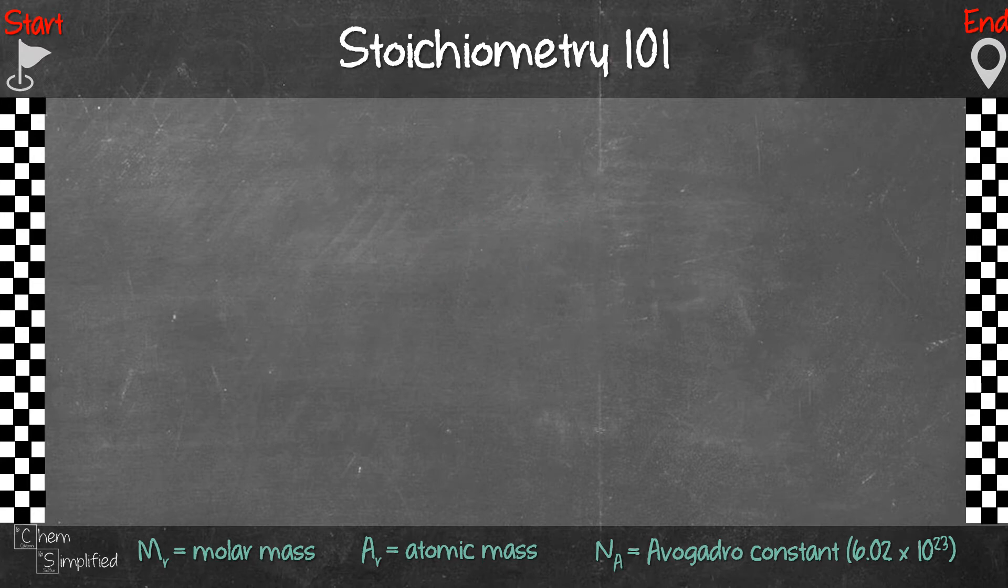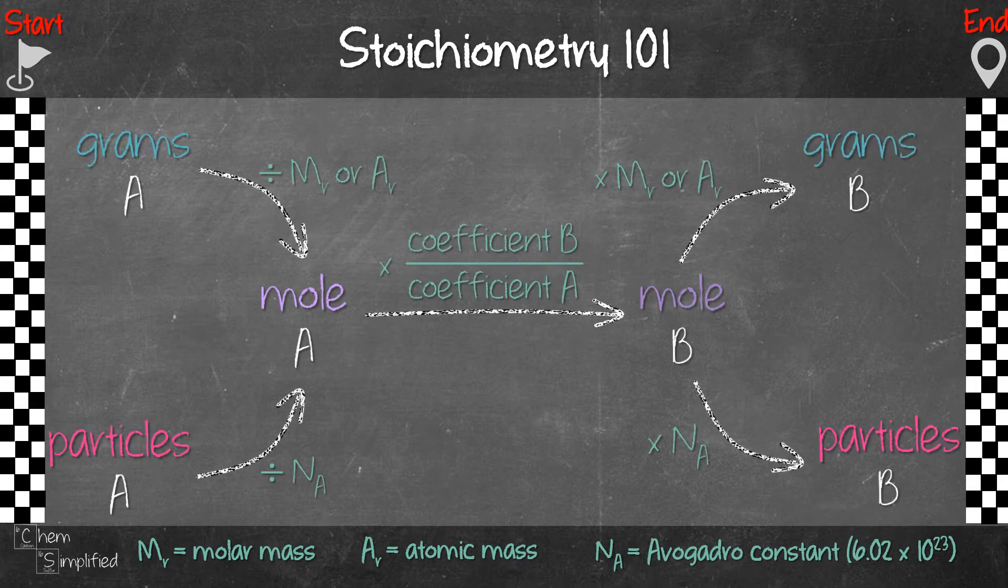So if we are to put together all the plans that we went through individually earlier, it will look something like this. On the left hand side is what we're given and so that's the start. On the right hand side is our destination. That's what the question wants us to find. So depending on what the question gives, you can follow the plan and you will be able to solve the questions with ease.